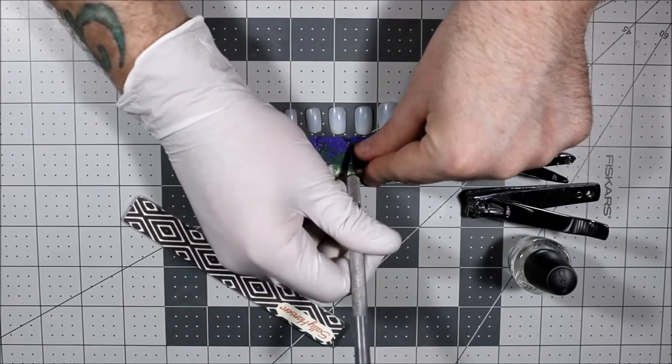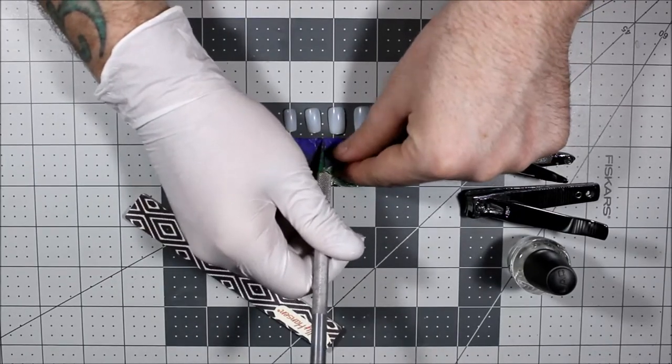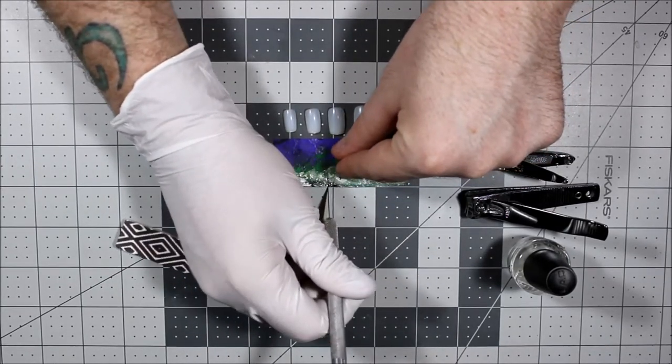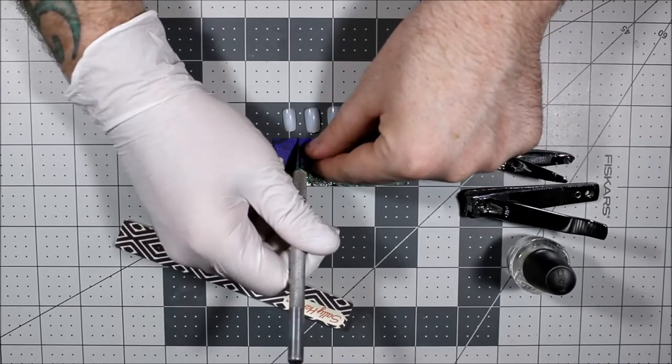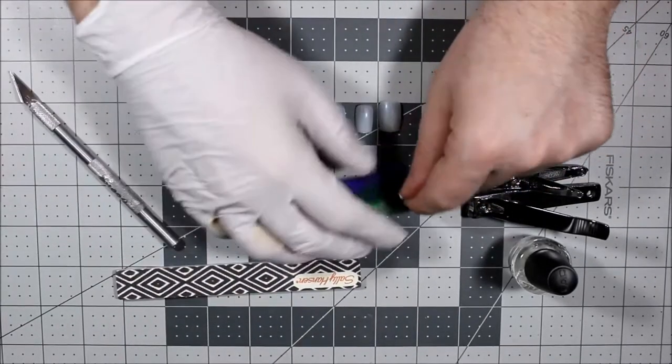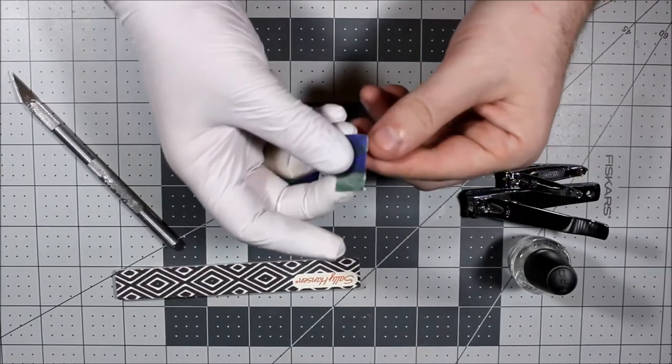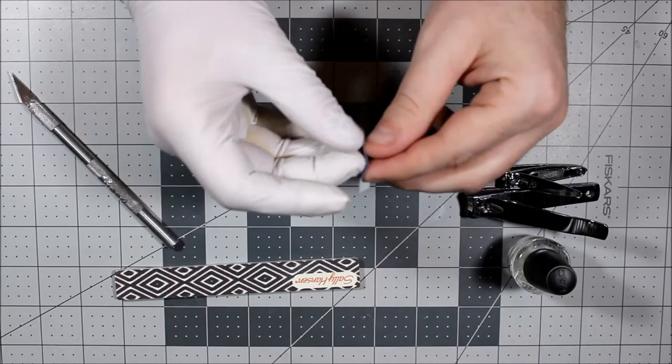And once I'm done with this, we can then have these separated strips of paint, these dried acrylic skins. Once we peel it off, what we'll be able to do is lay it over the top of the nail.